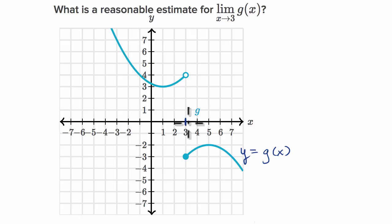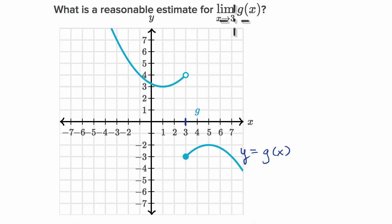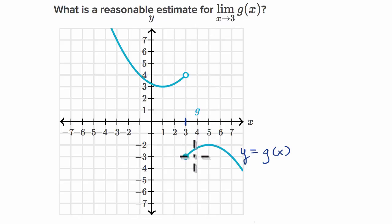What you need to do is think about what is the limit of this function as we approach three from the left, and also what it appears to be from the graph as we approach this value from the right. If it looks like we're approaching the same value, then that would be a reasonable estimate for the limit. They say reasonable estimate because we're going to do it by inspection — we don't have a lot more information about the graph to know for sure, but from the graph we can come up with a reasonable estimate.